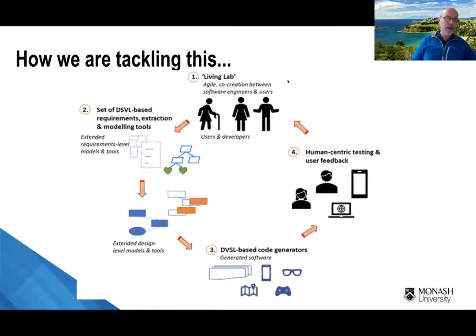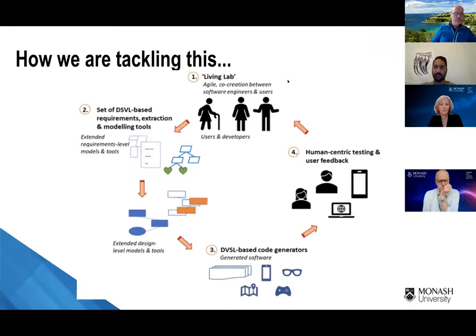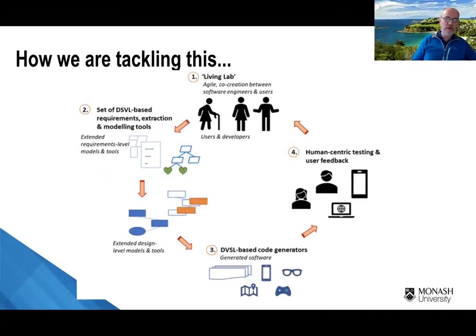How are we tackling this? In our lab, we're creating a co-creational living lab situation, treating all participants as first class citizens rather than the 'them and us' divide. We're using visual languages to model not just functional and non-functional requirements, but the human aspects at the requirements and design levels. We're synthesizing multiple implementations of the same app tailored for different end user characteristics and trying to give a more human-centric feedback loop so you can rapidly diagnose problems. This approach might work nicely for AI-based software systems.